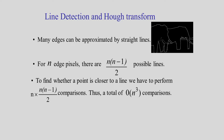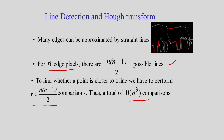Many edges can be approximated by straight lines. If I consider n edge pixels, the number of possible lines is n(n−1)/2, and to check whether a point is closer to a line requires N × n(n−1)/2 comparisons. That is the order of complexity, making the line grouping problem very difficult. That is why we consider the Hough transform.